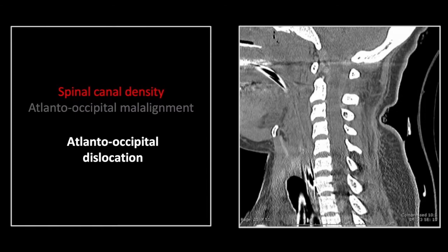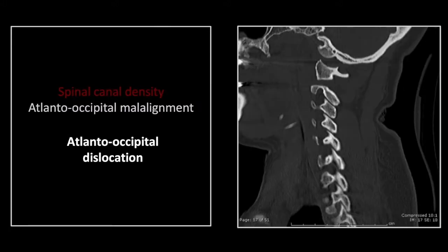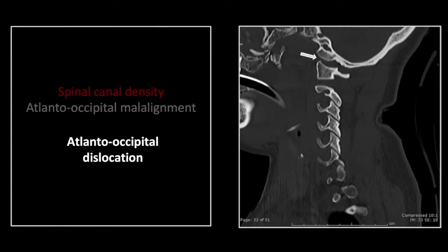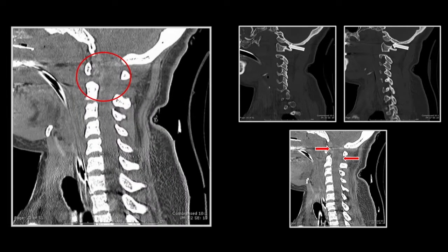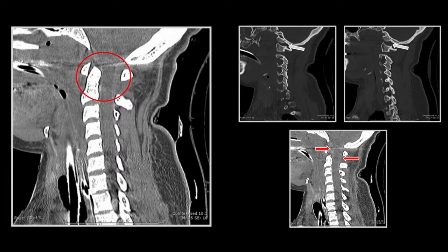This is nearly always a fatal injury, and it is nearly always associated with epidural hemorrhage in the superior cervical region. Here you see that epidural canal density anteriorly and posteriorly. It is critical to use the orthogonal views to detect this particular disruption — the malalignment of the condyle and of the C1 lateral masses on one side and on the opposite side. Obviously, the condyles are unseated and distracted.